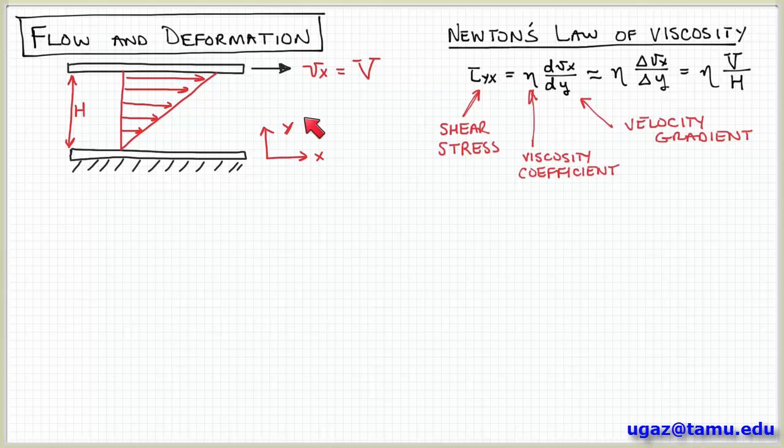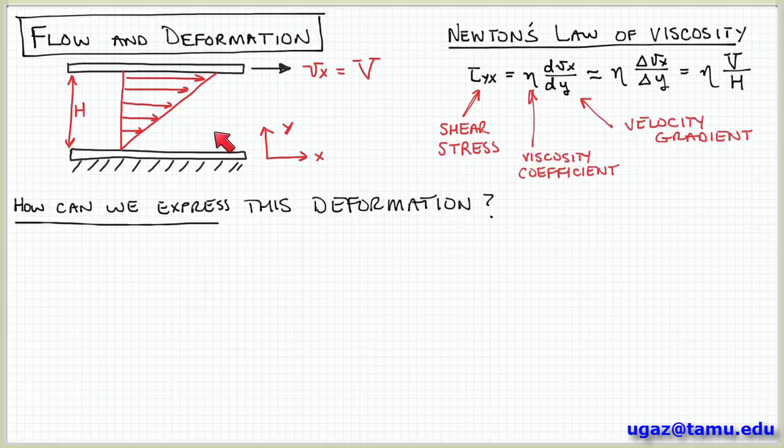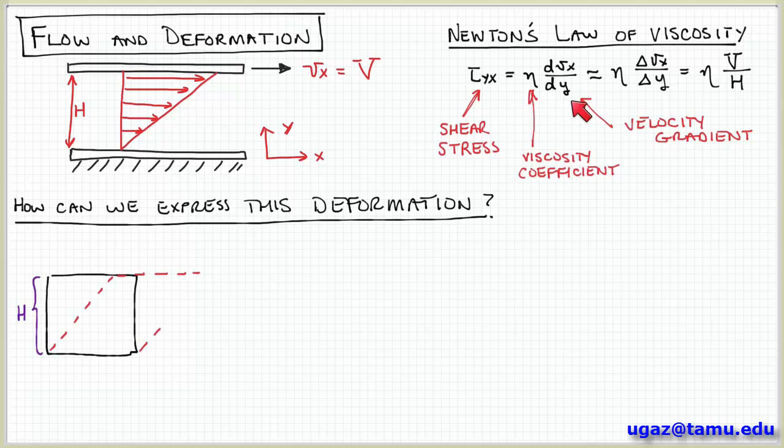Now for this scenario where the gap between these plates is small, we can express this derivative in terms of the change of velocity over the change in y. As y goes from 0 to h, the velocity goes from 0 to v. So I can express this as the coefficient of viscosity times v over h. It's pretty easy to see for this simple flow, driven by the shearing motion of the top surface with respect to the stationary bottom surface, how this relationship between stress and velocity gradients is established.